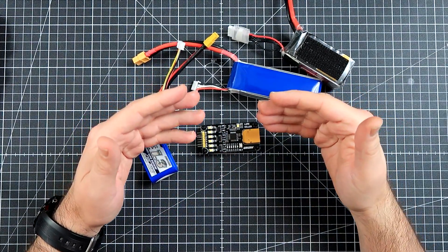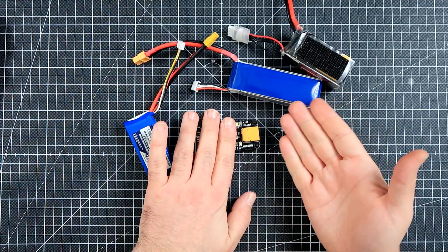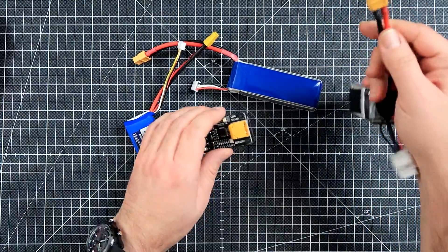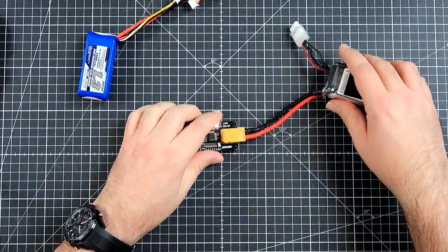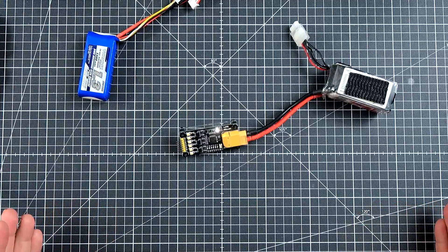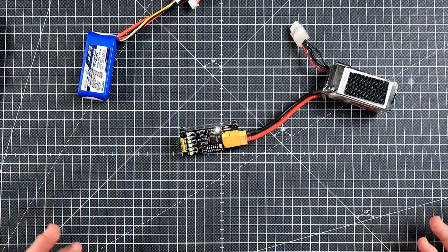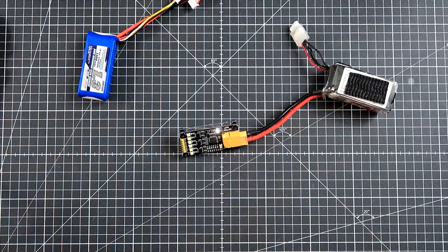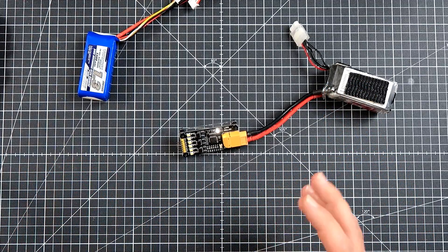It's called the UR UAV LiPo Killer. This side with the XT60 plug is used to kill the battery. You connect the battery, leave it like this, and after a few hours—20, 30, 40 hours depending on the capacity—it should go down to zero voltage.